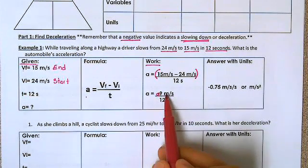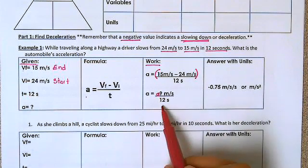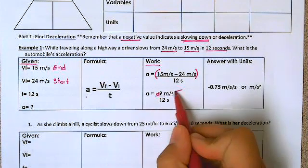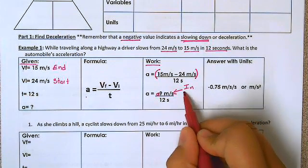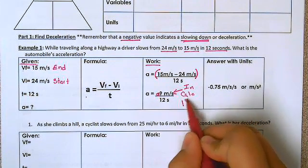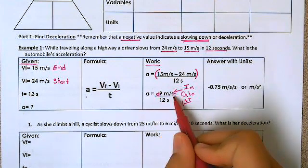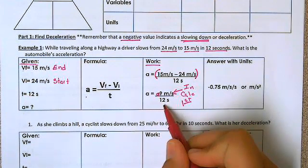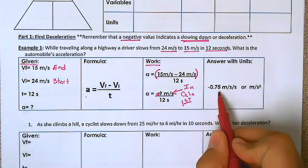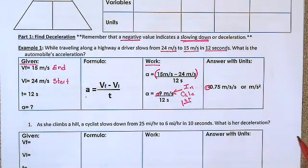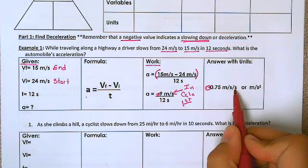So we have negative 9 meters per second divided by 12 seconds. So when we divide that in the calculator remember that whatever is on top goes in the calculator first. So put negative 9 divided by 12 and you should get negative 0.75. So make sure you have that negative. It is very important and this is meters per second per second.